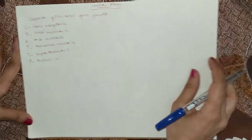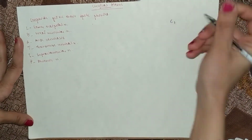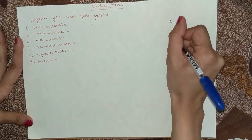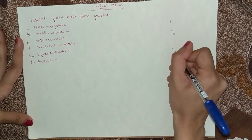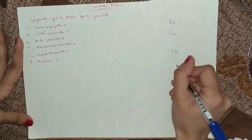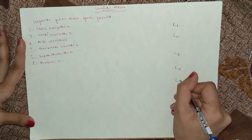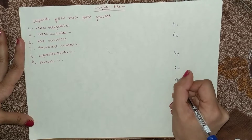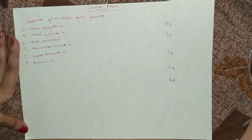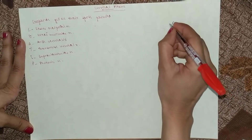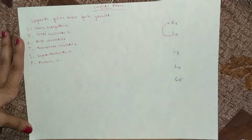Now we'll draw it out. So we've got C1, C2, C3, C4, and C5. They're connected to one another in various ways.